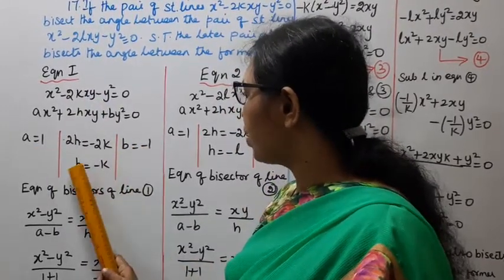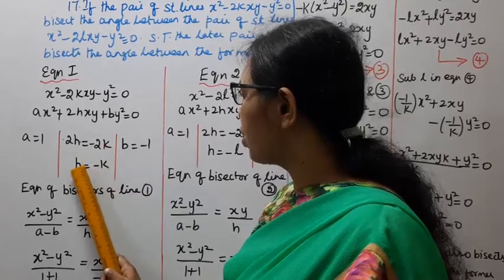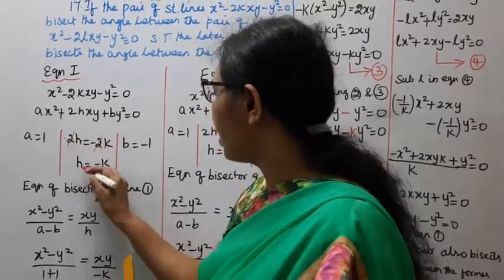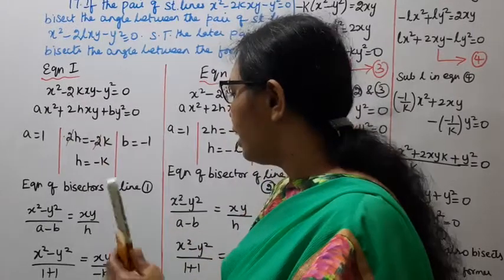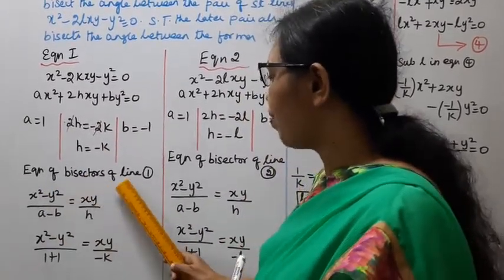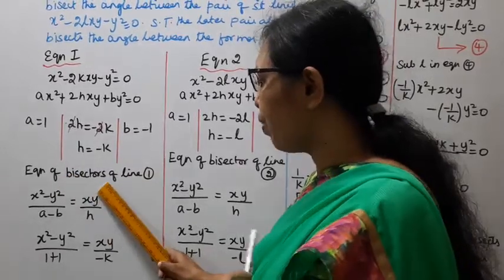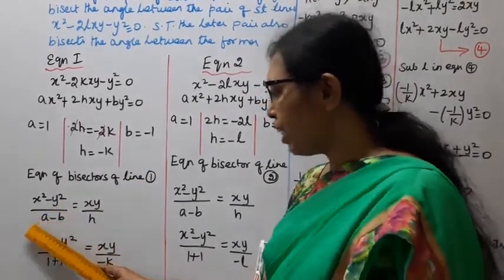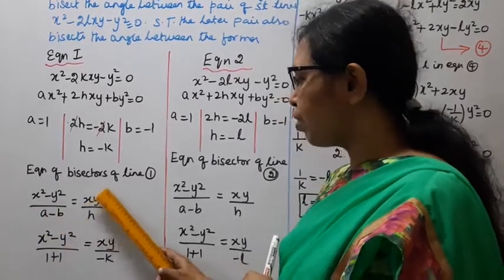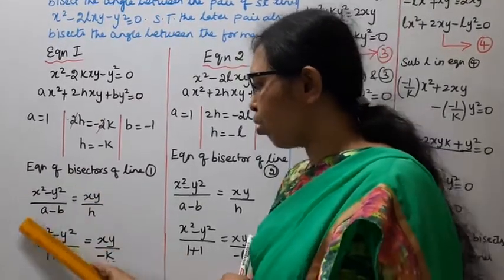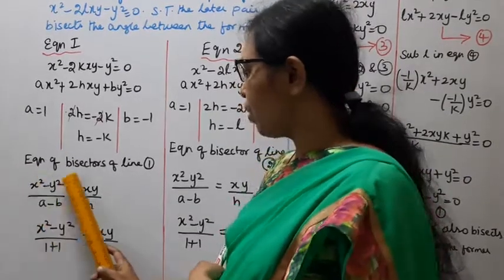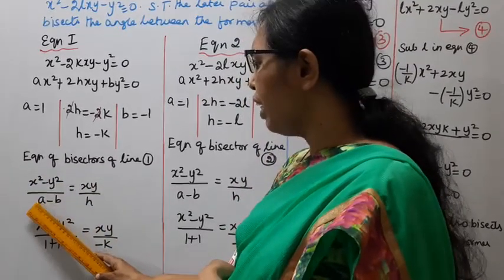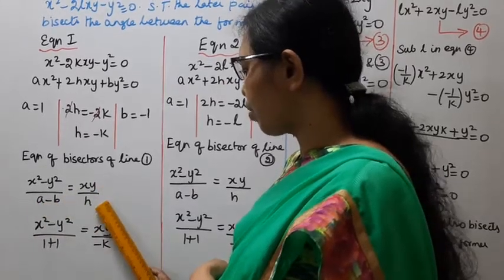So A = 1, b = -1, and from 2h = -2k, cancelling 2 we get h = -k. The equation of bisectors of line 1 is: (x² - y²)/(a - b) = xy/h. This is the equation of bisectors of line 1: (x² - y²)/(a - b) = xy/h.